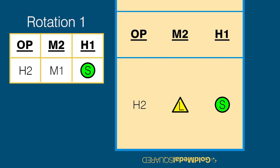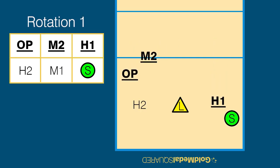In serve receive, Rotation 1 provides more options than any other rotation. The most traditional formation has the H1 stepping back and passing in Zone 1. She will be hitting a red. The opposite will hit a go, and the middle will hit a gap or a quick.